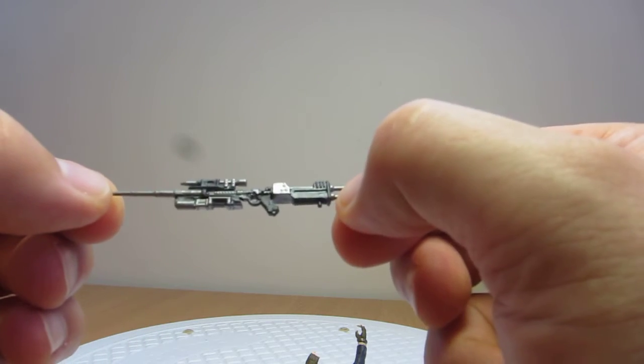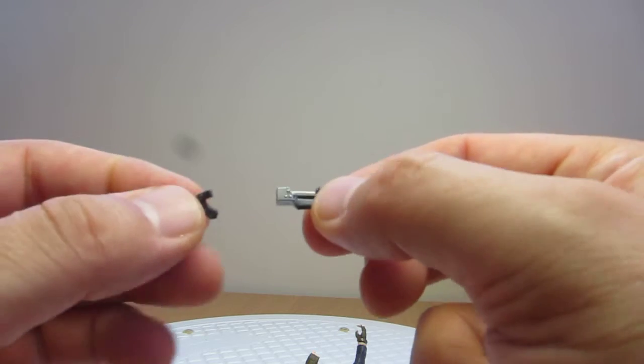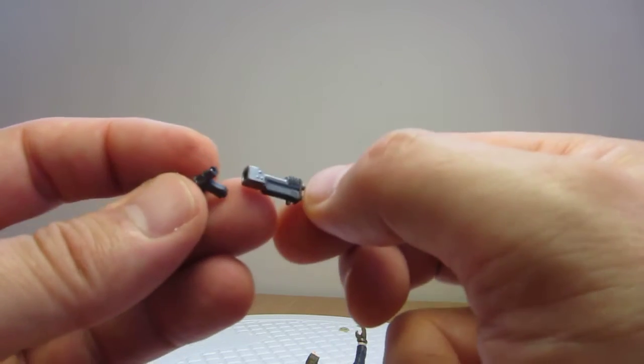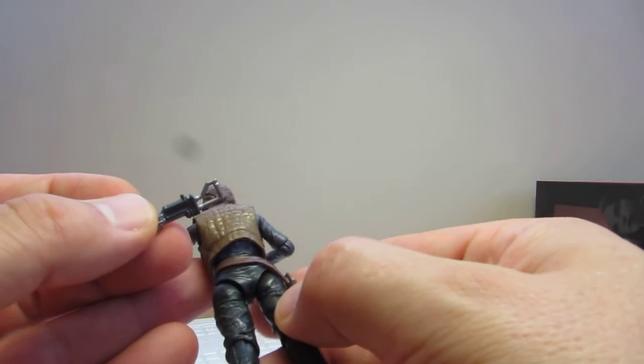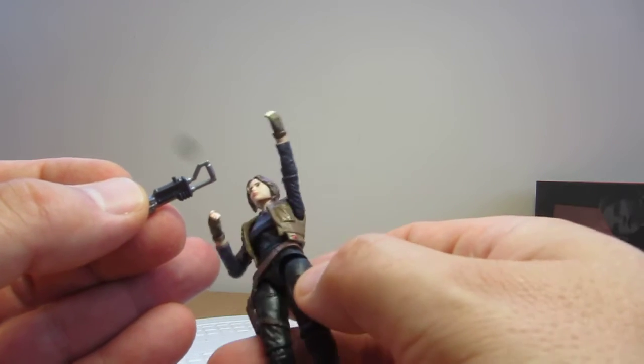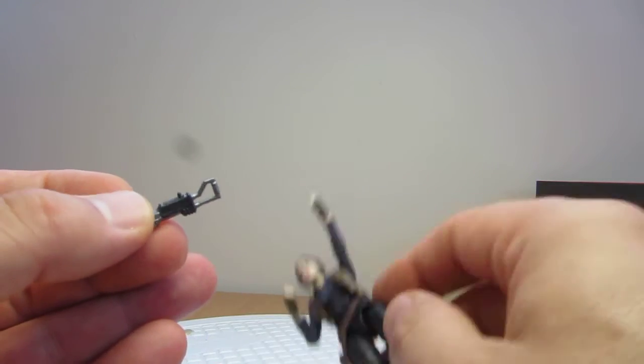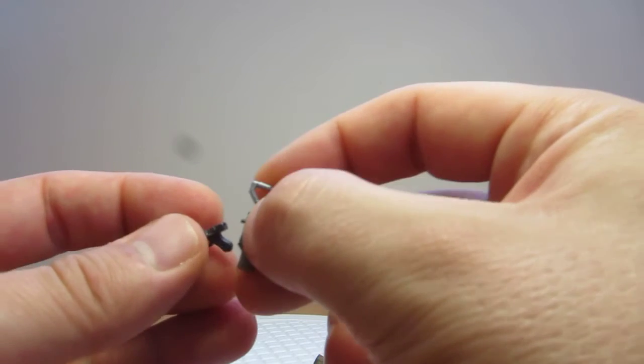So what it does is split into three parts. We've got the butt piece that clips on the back there, and there's a little pin here. I don't see anywhere on the figure that this can pin into, so I'm not quite sure what that little piece is designed to do.